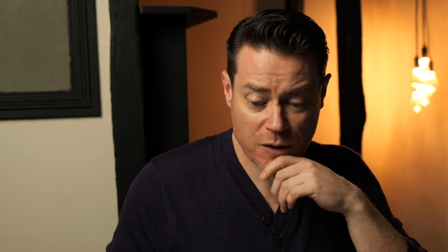One other value worth mentioning briefly is the coefficient of variance, which is calculated as the standard deviation divided by the mean, multiplied by 100. In other words, it's the percentage that your standard deviation is of your mean. The higher the number, the bigger the error on your measurement.